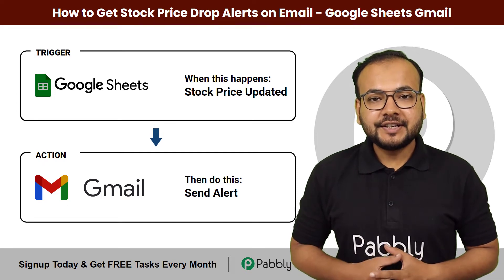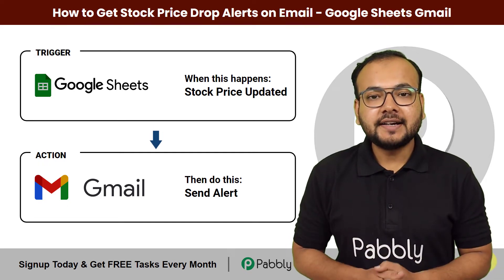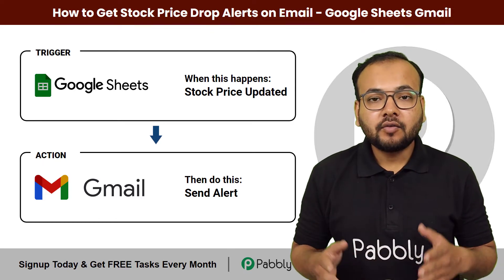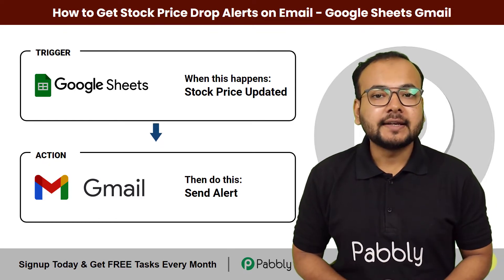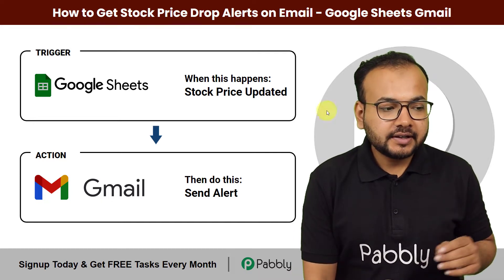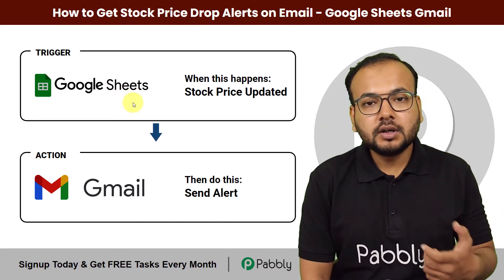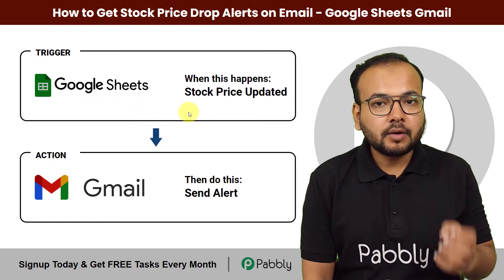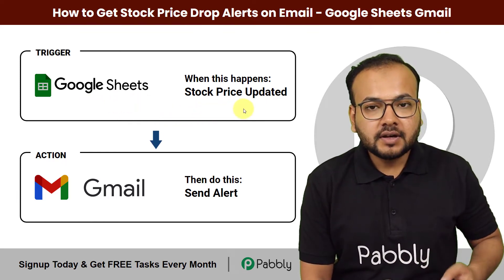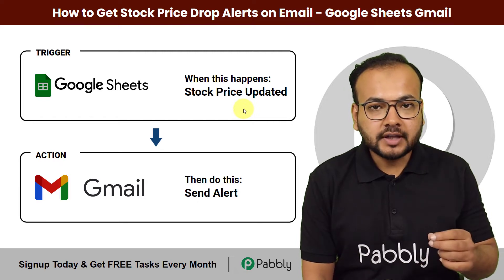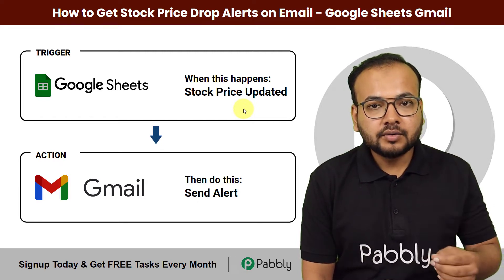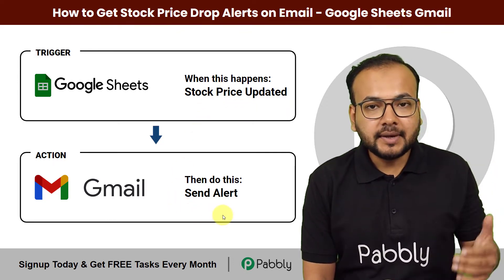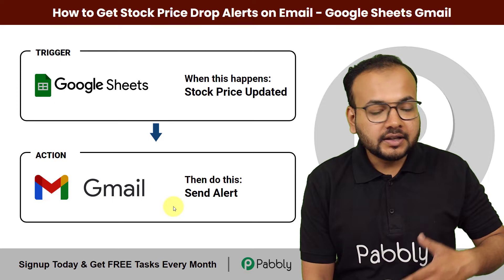In this video you will learn how you can get a stock price drop alert on your email from your Google Sheets automatically. Whenever the price of a stock that you own falls below the price at which you purchased that stock, you will receive an alert email automatically via the workflow.